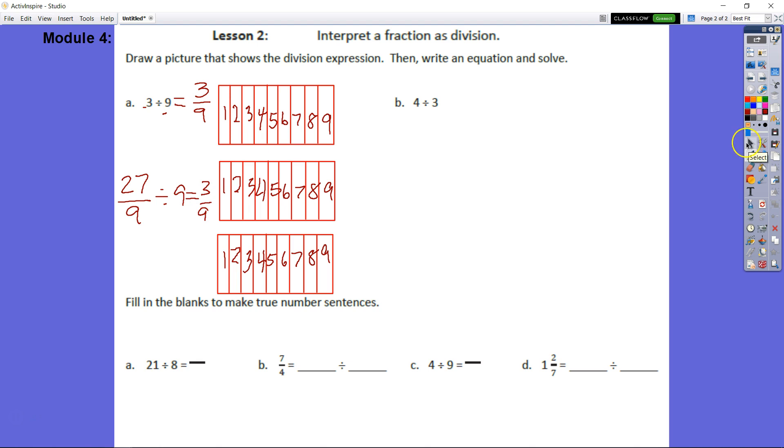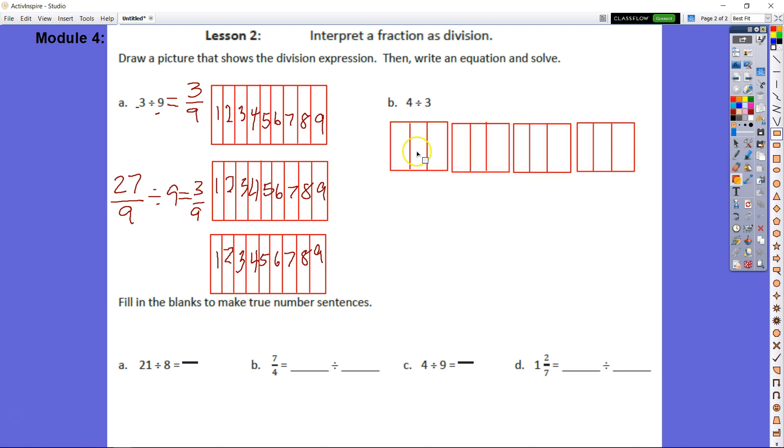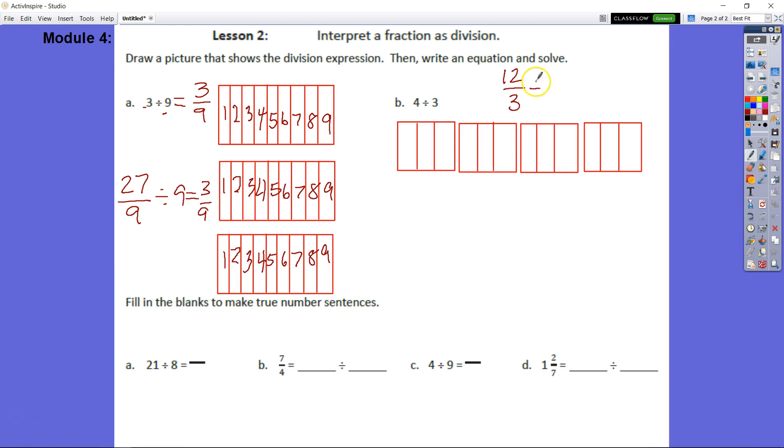Looking at B here, we have 4 divided by 3. We would have 12 thirds. That's equal to 12 thirds divided by 3, which is 4 thirds. Same thing: we have our dividend as our numerator, and our fraction bar equals our division sign, and our divisor is our denominator.